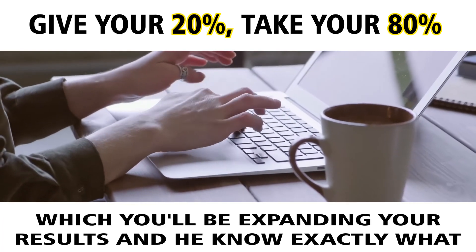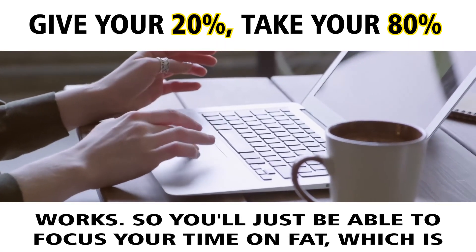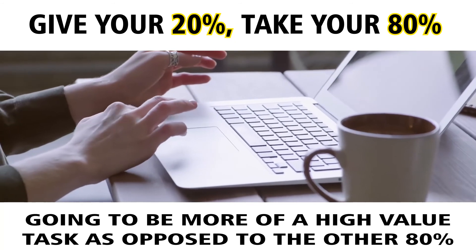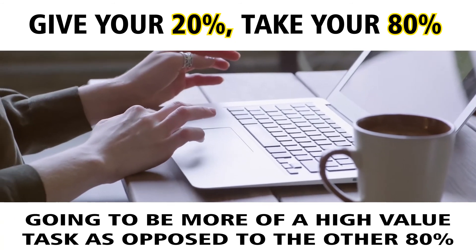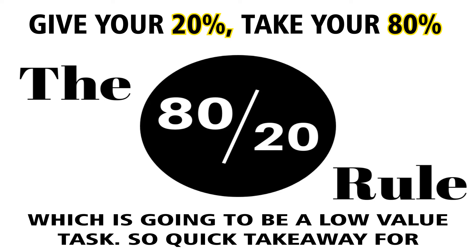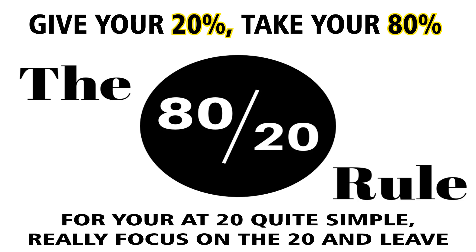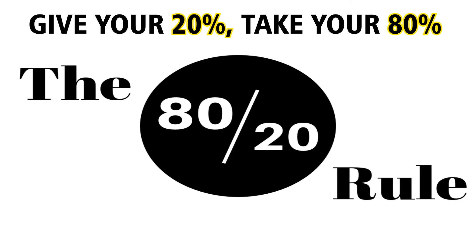As a result, you'll be expanding your results, and because you know exactly what works, you'll be able to focus your time on high-value tasks as opposed to the other 80% which are low-value tasks. Quick takeaway: how does the 80-20 principle apply to social media? Quite simple — focus on the 20% and leave the 80% behind.